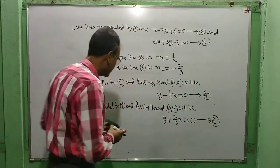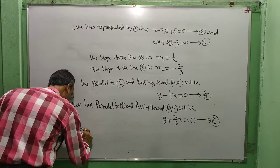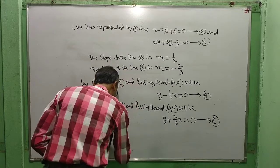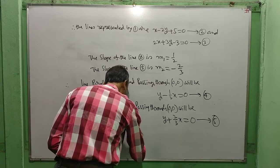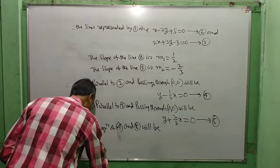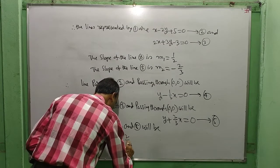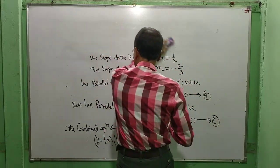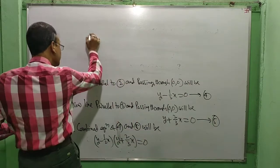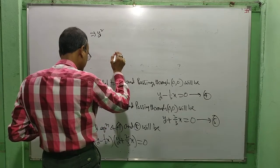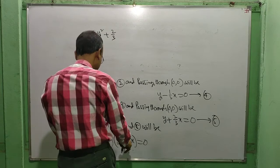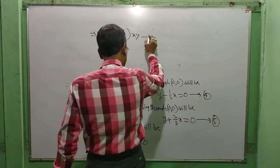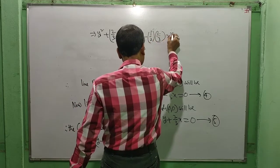Now the combined equation of lines 4 and 5 will be: (y − x/2)(y + 2x/3) = 0. Expanding: y² + (2/3)y·x − (1/2)x·y − (1/2)(2/3)x² = 0.